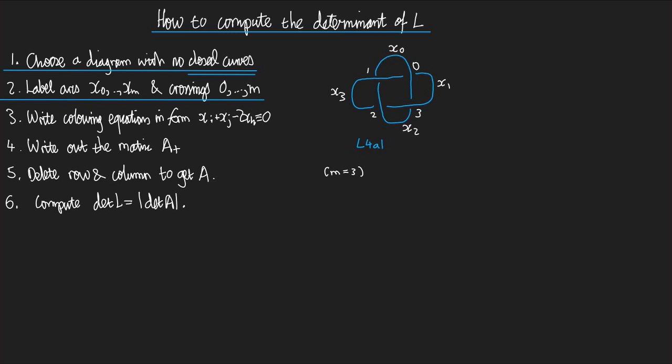That's a consequence of the fact that we have no closed curves. And it follows from a lemma in the notes that if there are no closed curves, then there's as many arcs as there are crossings. Okay, so we've done step two. Let's go on to step three.